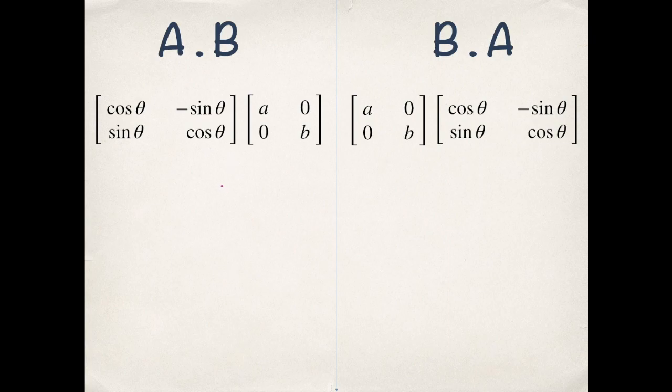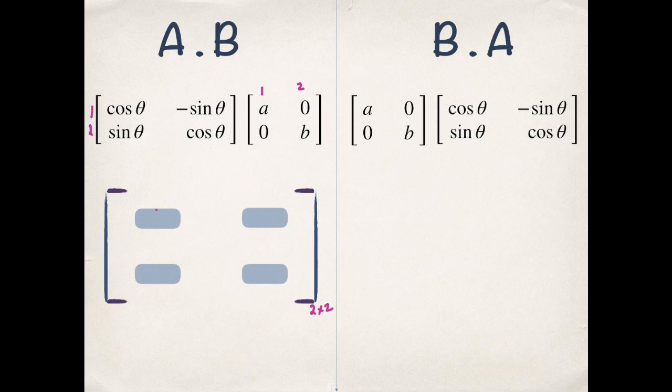Now let's find A product B. The resultant matrix will be of size number of rows in the first matrix and number of columns in the second matrix. So it will be of size 2 by 2. Now to find the elements, let's first number the rows and the columns of the resultant matrix.